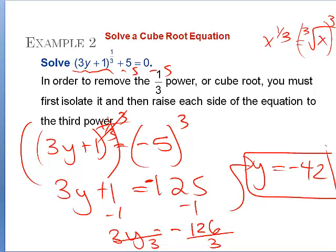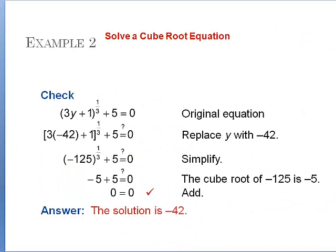We need to check that solution. In the interest of time, the checking has been done already. Substituting y = −42: multiply by 3, add 1, take the cubed root, then add 5 — and it works. So this is an actual solution.